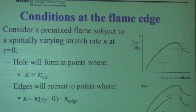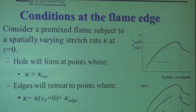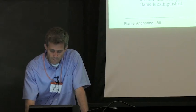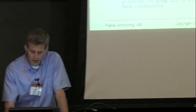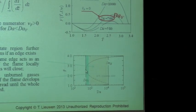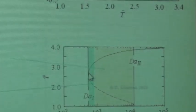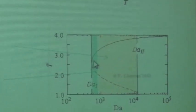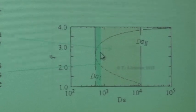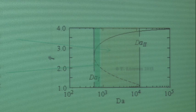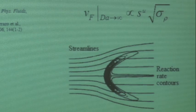Kappa extinction denotes the extinction stretch rate. So we know that if the stretch rate exceeds kappa extinction, the flame goes away. But we also know that there's a range of values that once you have a flame edge, if you had a kappa value within this range, once you create an edge, that edge will continue to grow. So at time t equals zero, I have the strain profile, and I'm going to have a hole. The flame will extinguish at points where the stretch rate is greater than extinction stretch rate.